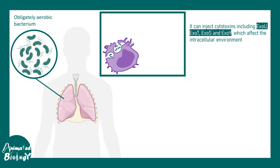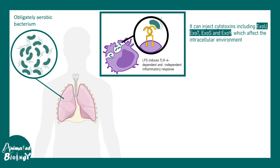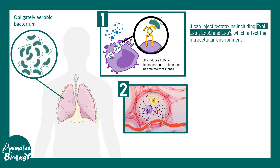There are specific macrophages which try to engulf the pathogen, and toll-like receptor signaling can recognize it. The lipopolysaccharide on the membrane is recognized by TLR4, leading to inflammatory cytokine release. This attracts more immune cells like neutrophils and dendritic cells to the location, which release further inflammatory cytokines. Overall, there is a huge lung inflammation that can occur with Pseudomonas aeruginosa infection.